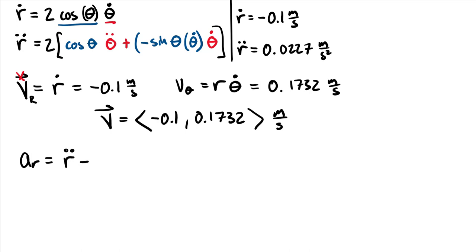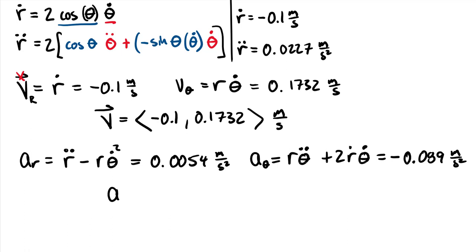Plugging in those values, we find the a r is equal to 0.0054, and that's going to be in meters per second squared. And then our a theta is equal to r times theta double dot, that second time derivative of theta, plus two r dot theta dot, just directly from our equation sheet or your work above. And we find that this is going to be a negative value, negative 0.089 in meters per second squared.